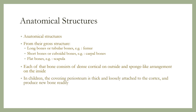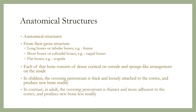In children, the covering periosteum is thick and loosely attached to the cortex and produces new bone readily. In contrast, in adults, the covering periosteum is thinner and more adherent to the cortex and produces new bone less readily.